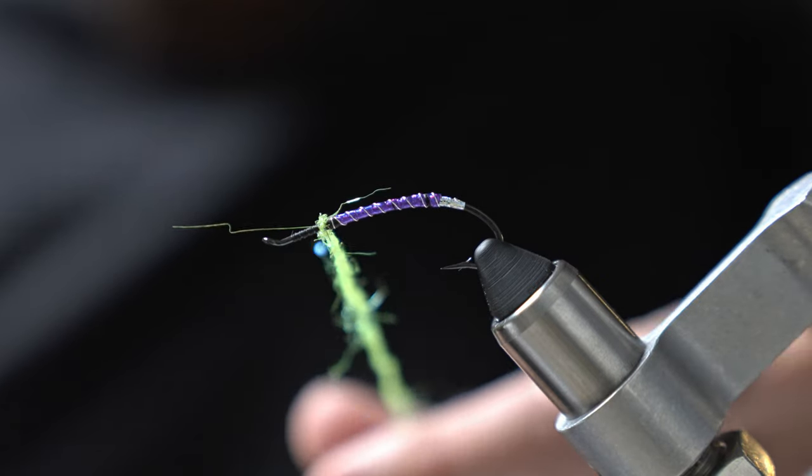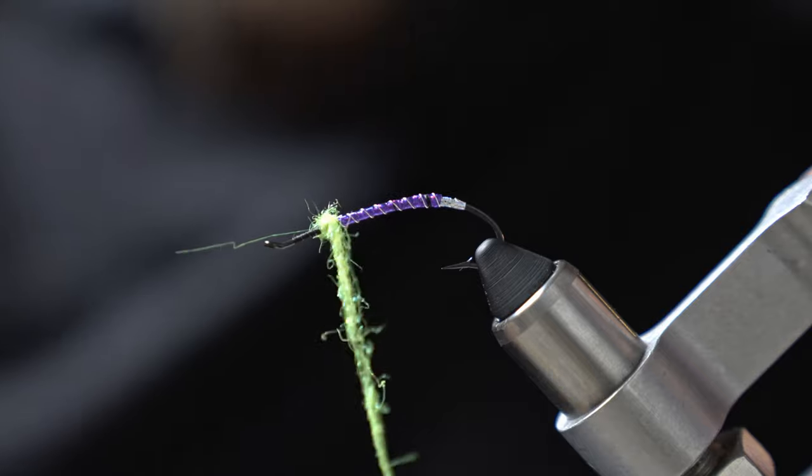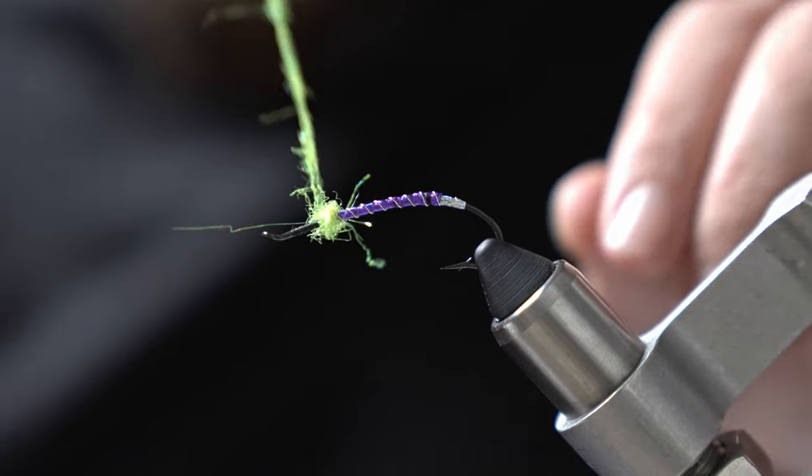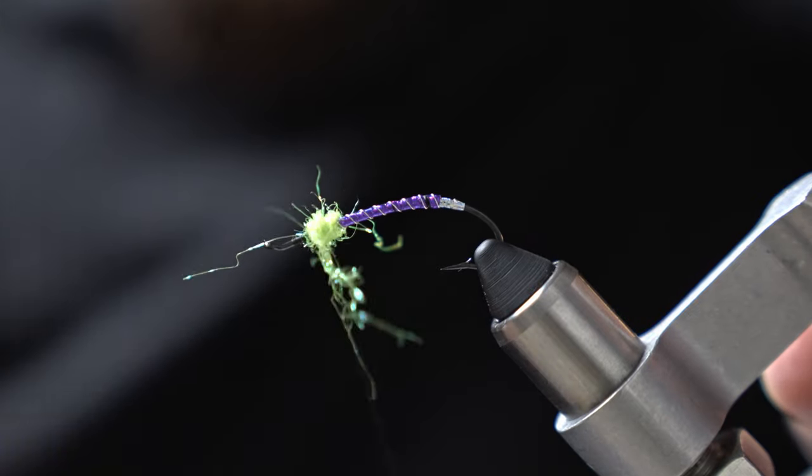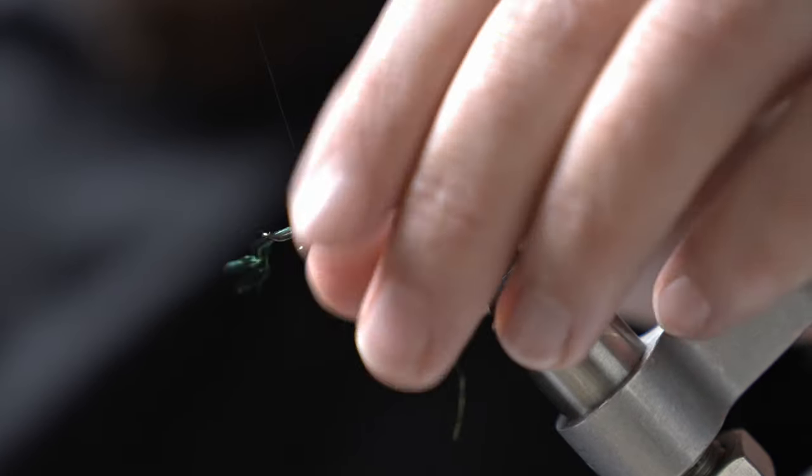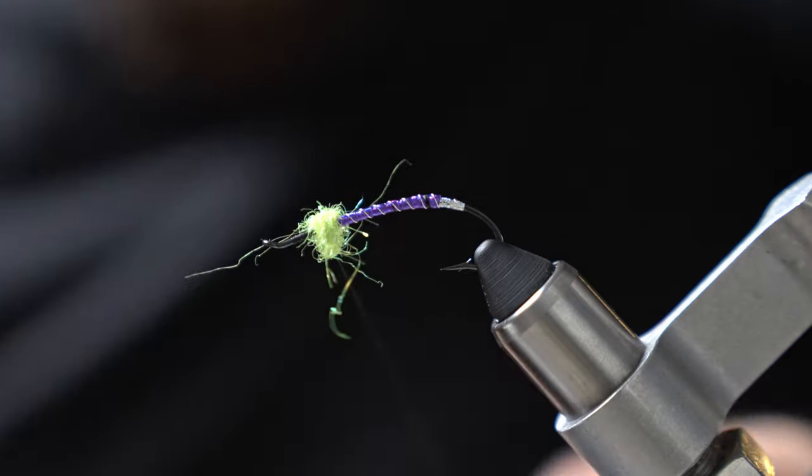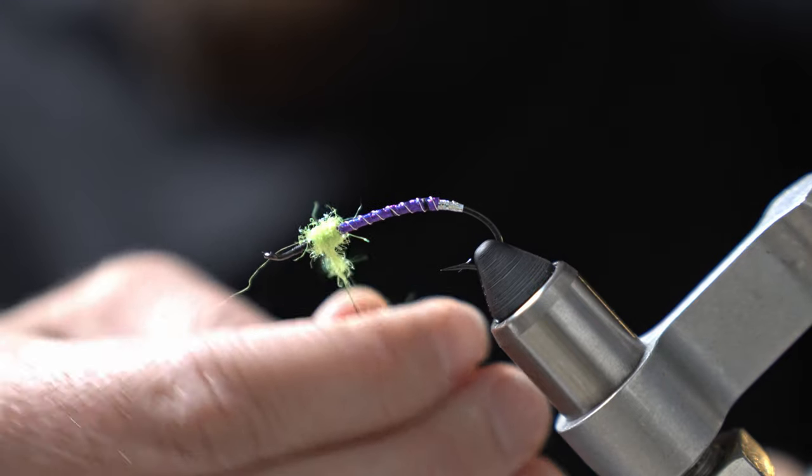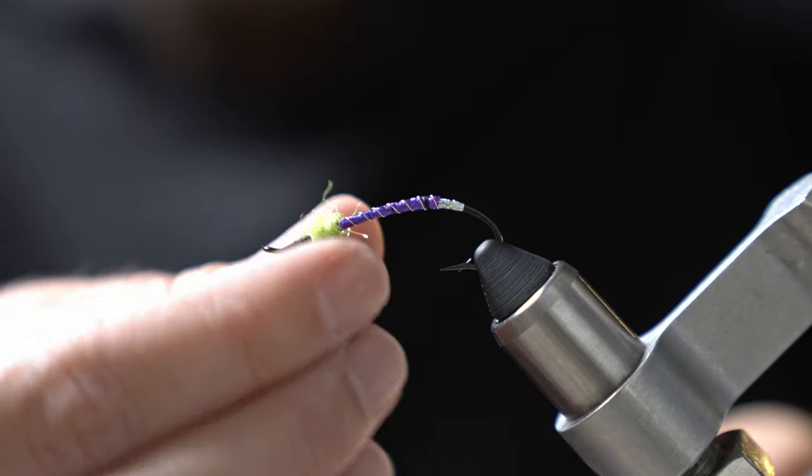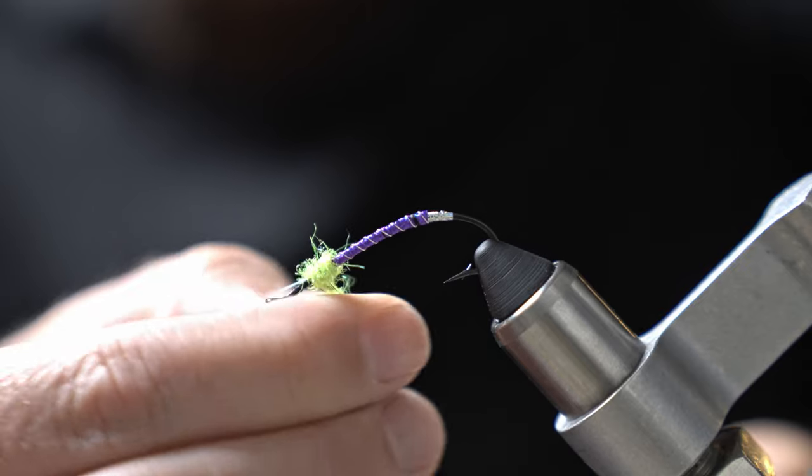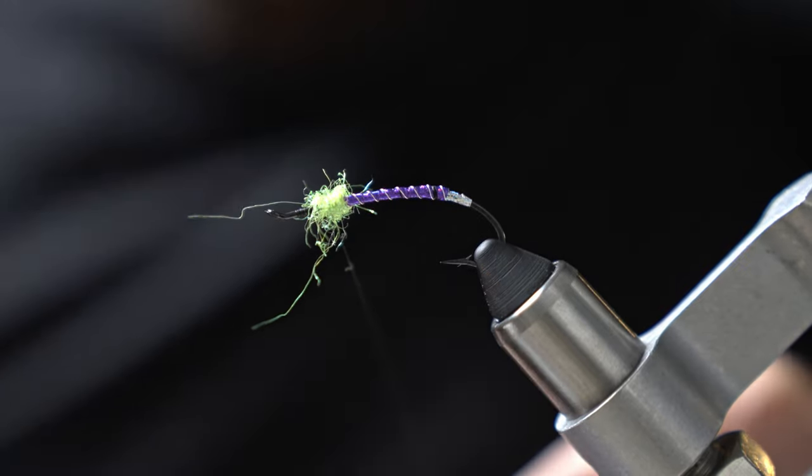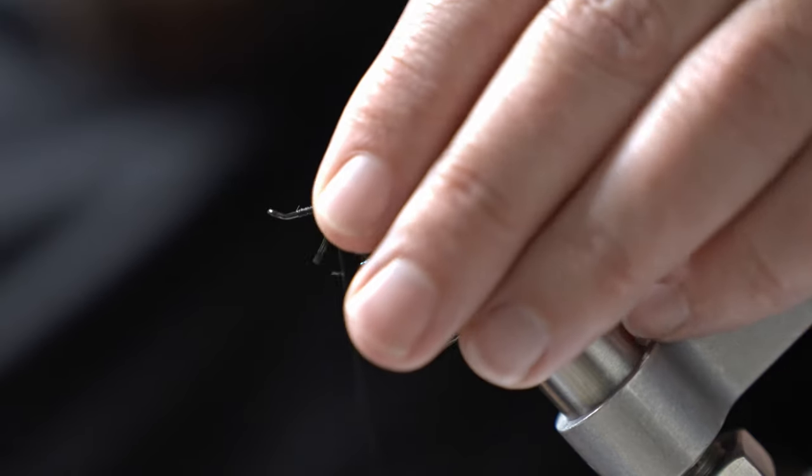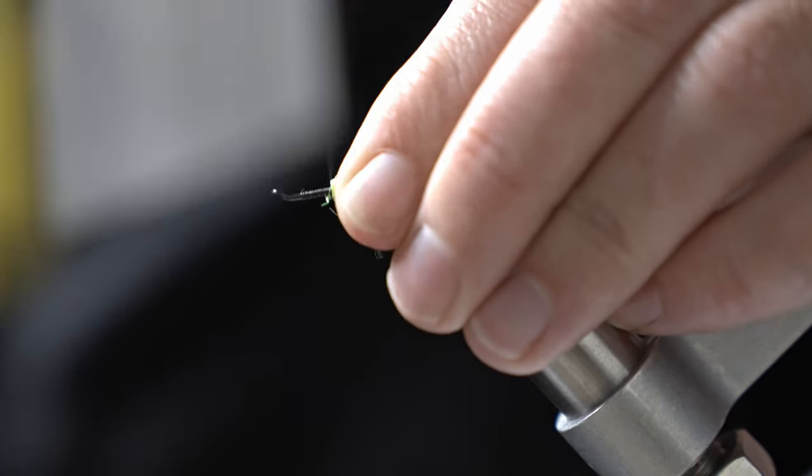So you could get fancy and tie in a dubbing loop, you could throw some wax on the thread. I'm just going to go ahead and throw that on there, twist it up on the thread and tie in a little ball. You don't want it to be too big, we don't need that big umbrella profile like you do in the winter. So I'm just going to take a little bit of that dubbing off, throw some thread wraps in front of it, get it nice and clean.